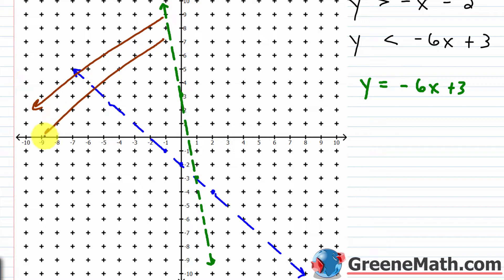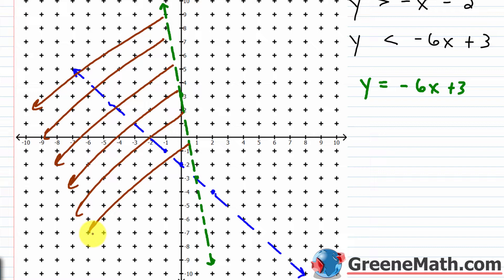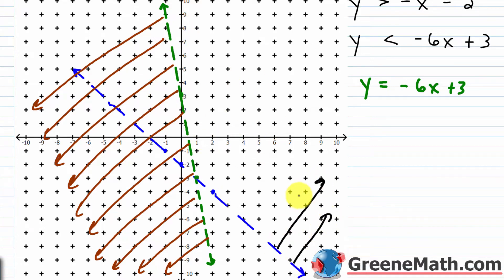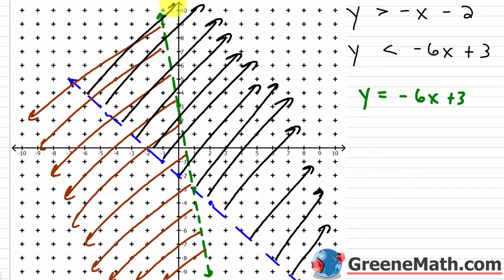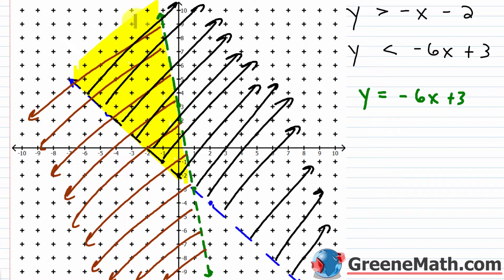I'm shading below the green line and above the blue line. Anywhere that is below the green line but also above the blue line would work as a solution for the system. I highlight that overlapping region — anything above the blue line and below the green line, that area of the coordinate plane.